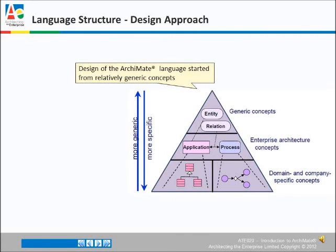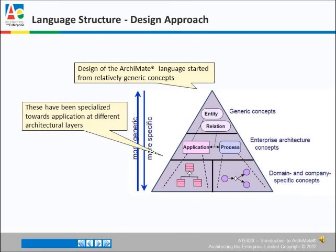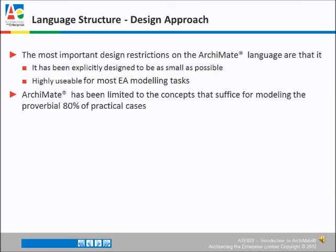Here you can see we start at the top of the triangle with very generic concepts, and then we can move lower into those that describe enterprise architectures, and then even further down to describe domain and company-specific concepts. The most important restriction that the Archimate designers placed upon themselves was that it should be as small as possible and very usable for most EA modeling situations. Archimate has been limited so that it will suffice for 80% of practical cases — that's using the famous 80-20 rule.